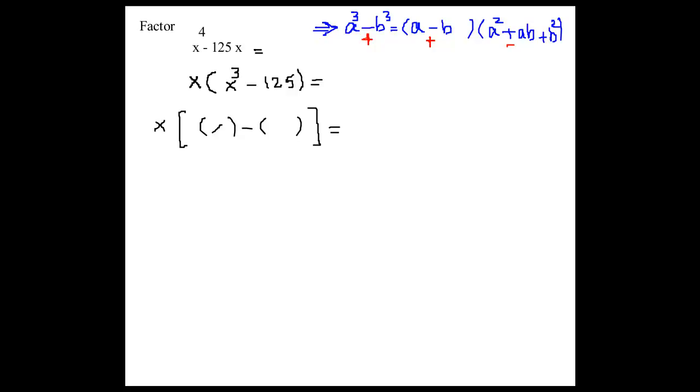The teacher identifies the first term as X. For the second term, they're looking for a number that when multiplied by itself three times equals 125. Sunith correctly identifies this as five. The teacher confirms that's exactly right.